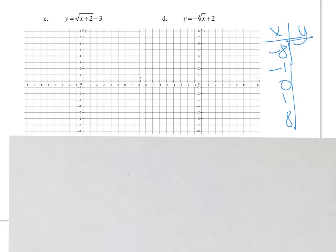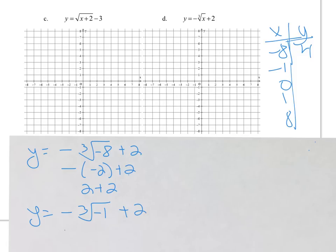So to evaluate and get the y values. This is negative of negative 2, so that's positive 2 plus 2, we get 4. This is negative of negative 1 plus 2, that's 3. Plug in 0, we'll get 2.